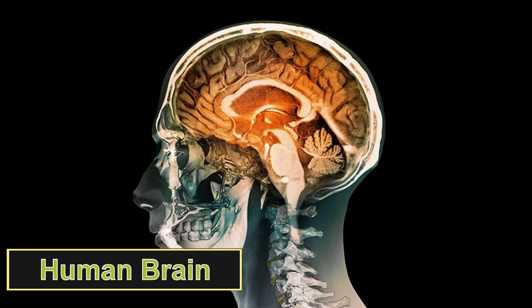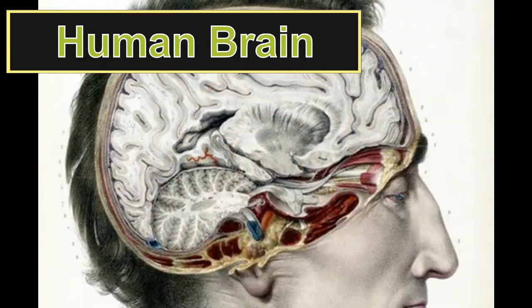The hindbrain is composed of the medulla oblongata and the pons. The medulla oblongata transmits signals between the spinal cord and higher parts such as the forebrain and midbrain. It also controls autonomic functions such as heartbeat and respiration — for example, it sends signals so that the respiratory organs work and we are able to breathe.